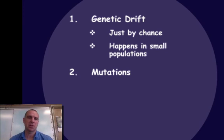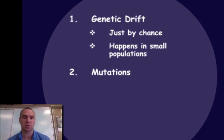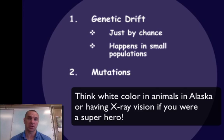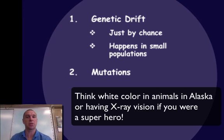The second way genetic equilibrium can change is by mutation. Mutations happen constantly — point mutations, frame mutations, chromosome mutations. If a mutation occurs that makes an organism better able to survive, it's going to cause genetic equilibrium to change because that organism is going to survive, mate, reproduce, and the allelic frequency of that mutated gene is going to increase and cause genetic equilibrium to change.